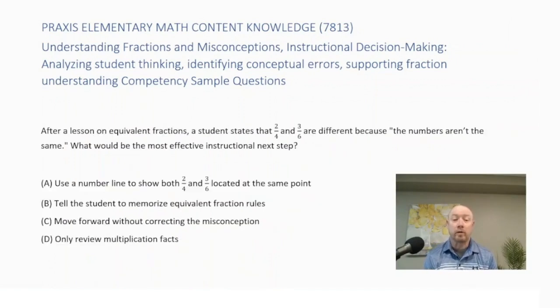After a lesson on equivalent fractions, a student states that 2-4 and 3-6 are different because the numbers aren't the same. What would be the most effective instructional next step? Is it A, use a number line to show that 2-4 and 3-6 located at the same point? Is it B, tell the students to memorize equivalent fraction rules? Is it C, move forward without correcting the misconception? Is it D, only review multiplication facts?